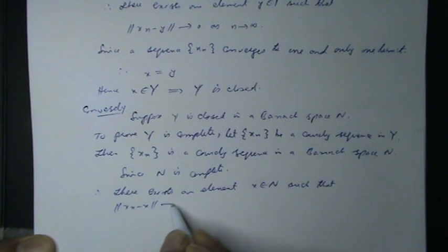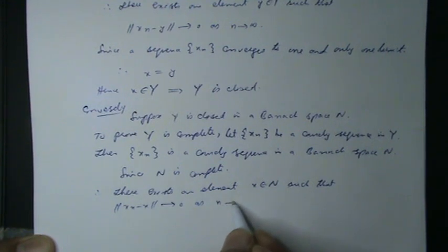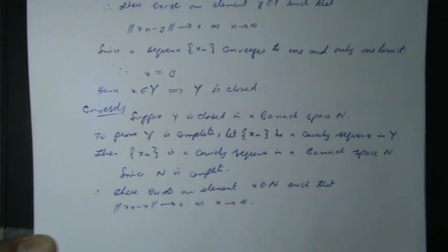||x_n - x|| converges to zero as n tends to infinity. But then x belongs to Y